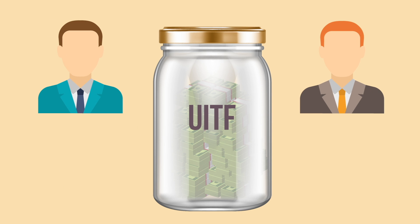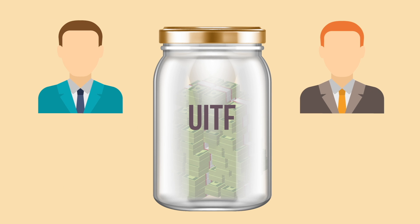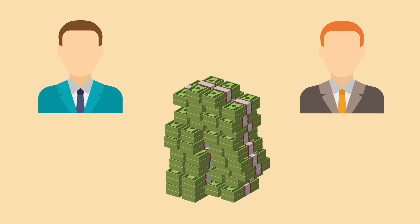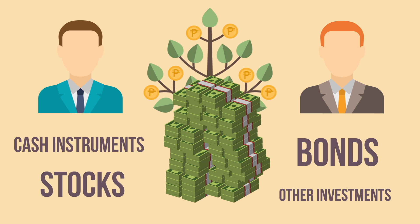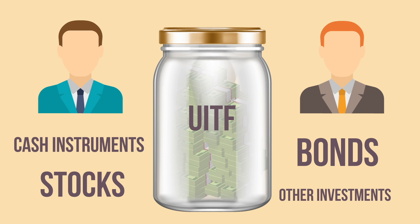The bank's experts or fund managers take all the money in the jar and invest it in various instruments like stocks, bonds, and other investments. They make investment decisions based on the UITF's objectives and strategy. If those investments make money, the value of the jar goes up, and the value of your units go up too.